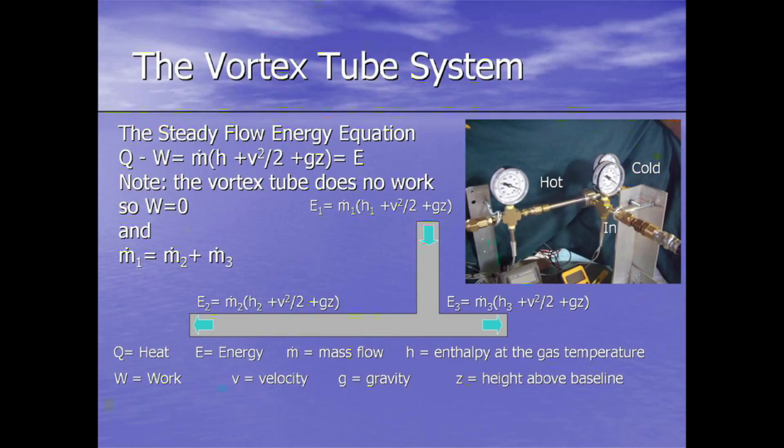Also remember, since the pressure and size of this device is not changing, the mass flow in equals the mass flow out, or ṁ₁ equals ṁ₂ plus ṁ₃. Next to each one of the ports is an equation for each one of the energies, and essentially you do some algebraic manipulations, you'll get E₁ equals E₂ plus E₃.